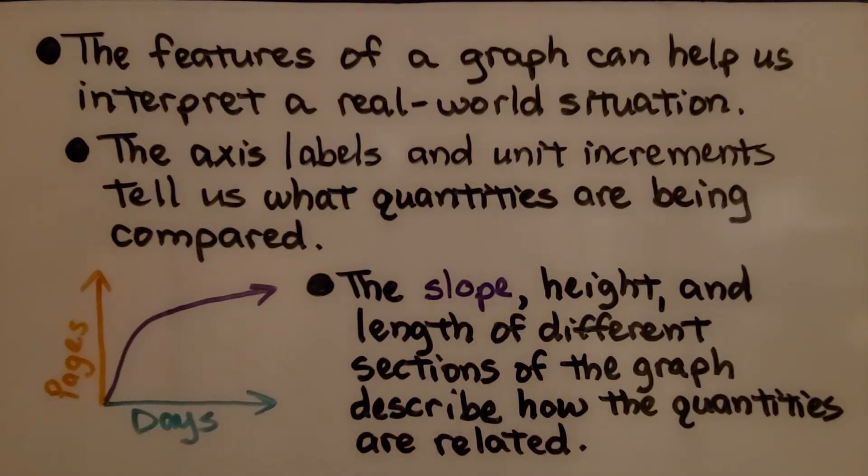The features of a graph can help us interpret a real-world situation. The axis labels, like days and pages, and unit increments tell us what quantities are being compared. The slope, height, and length of different sections describe how the quantities are related. We can tell from this graph that the person started reading a lot of pages per day, then slowly read less per day.